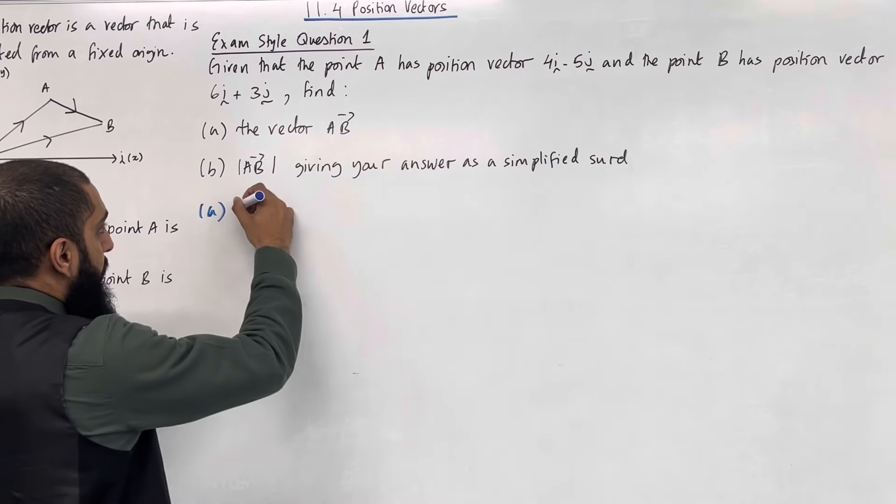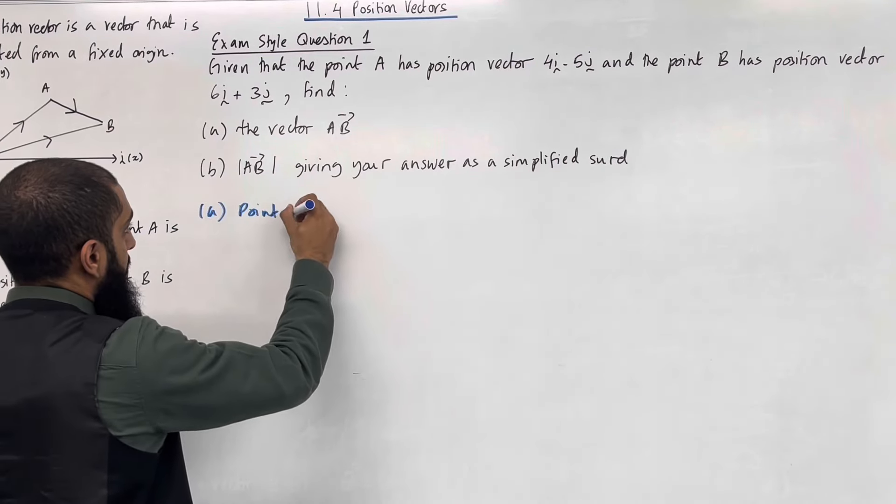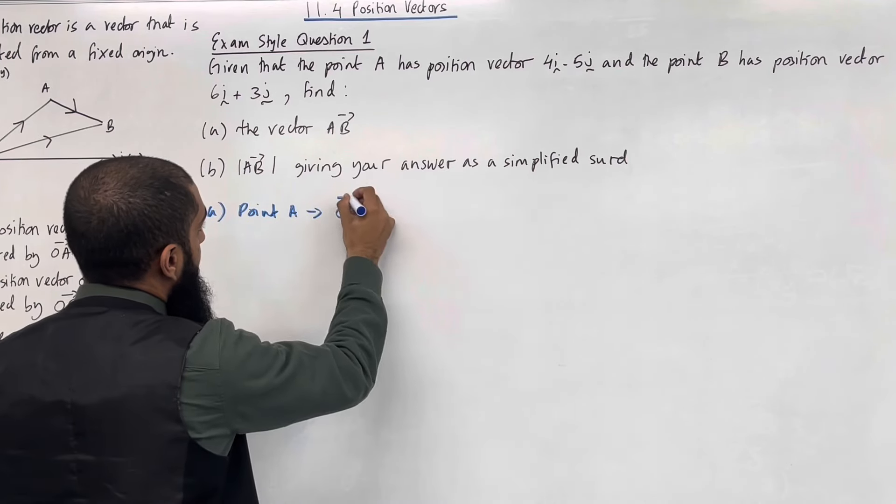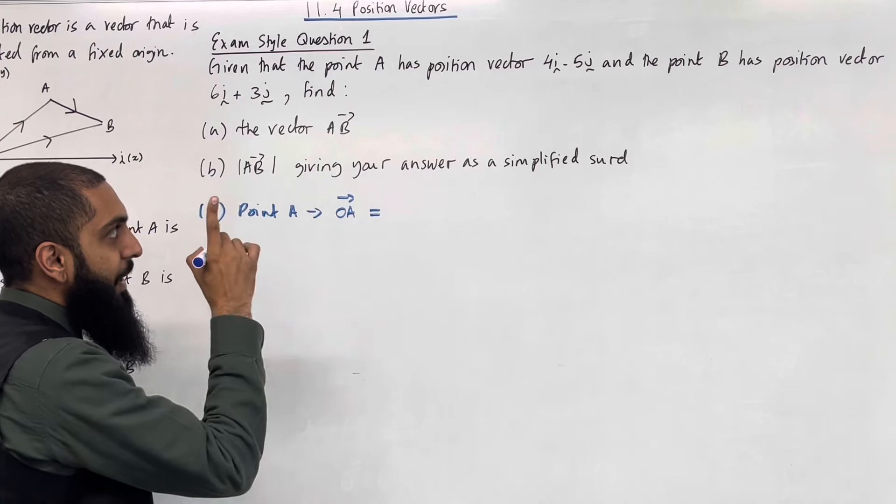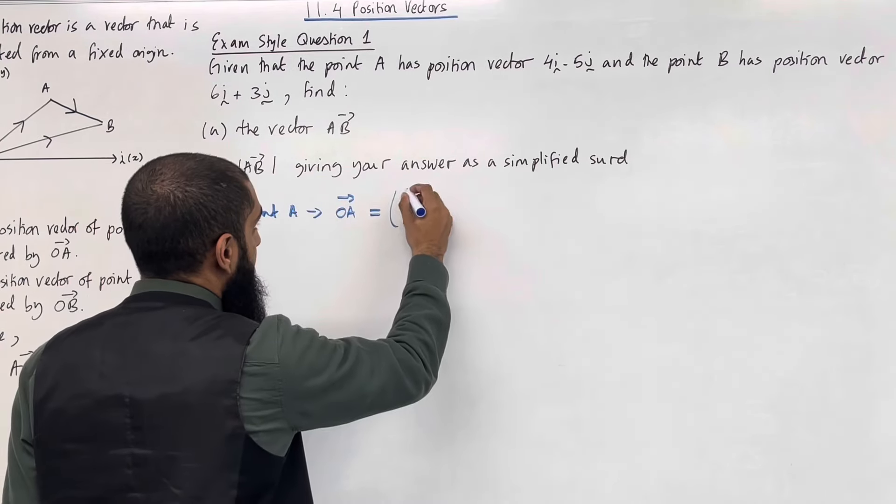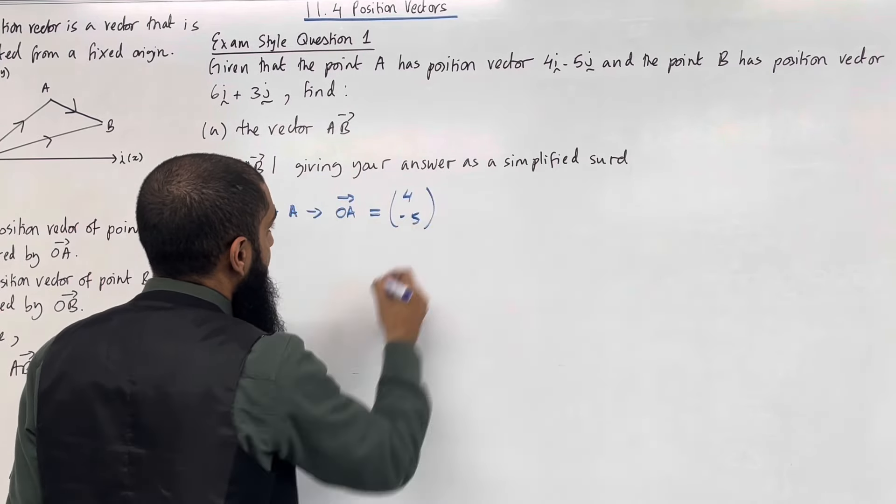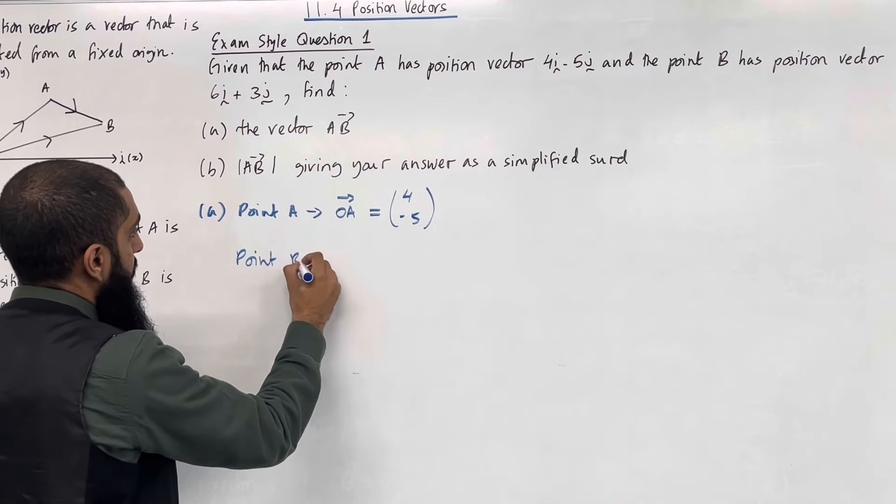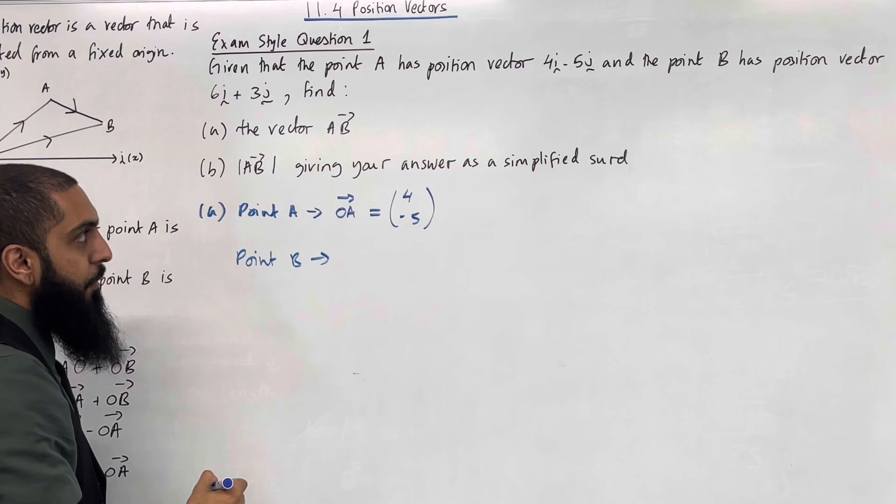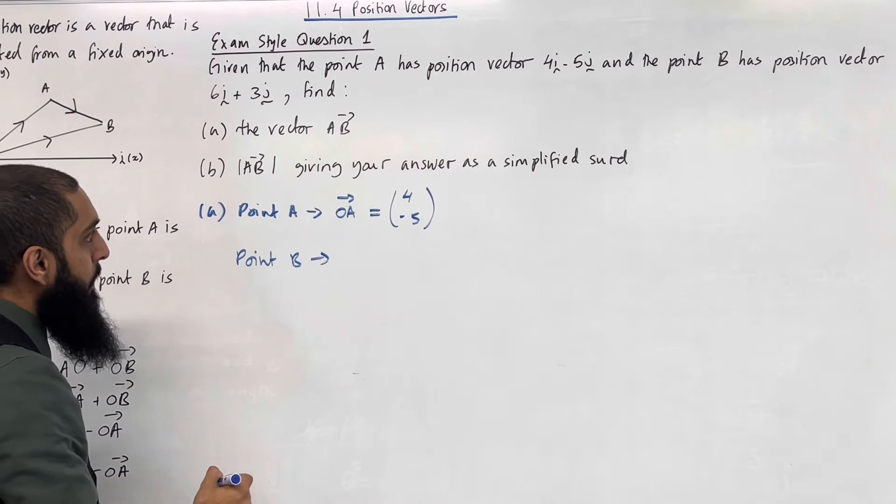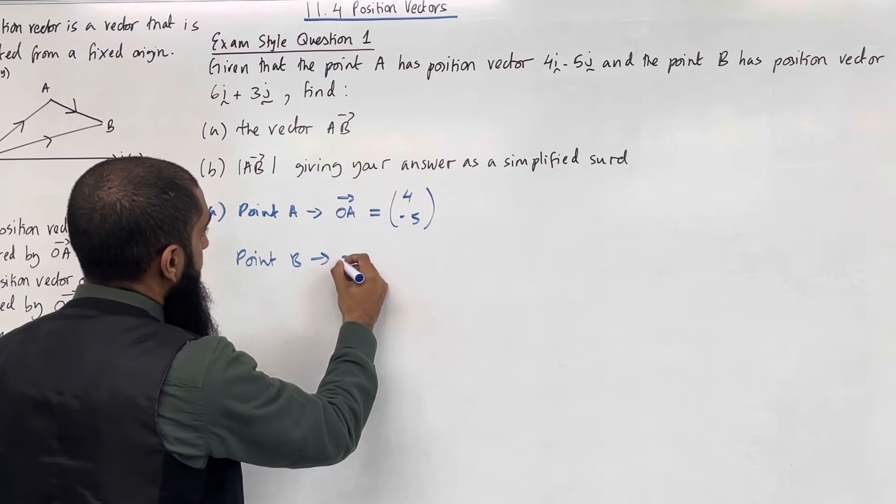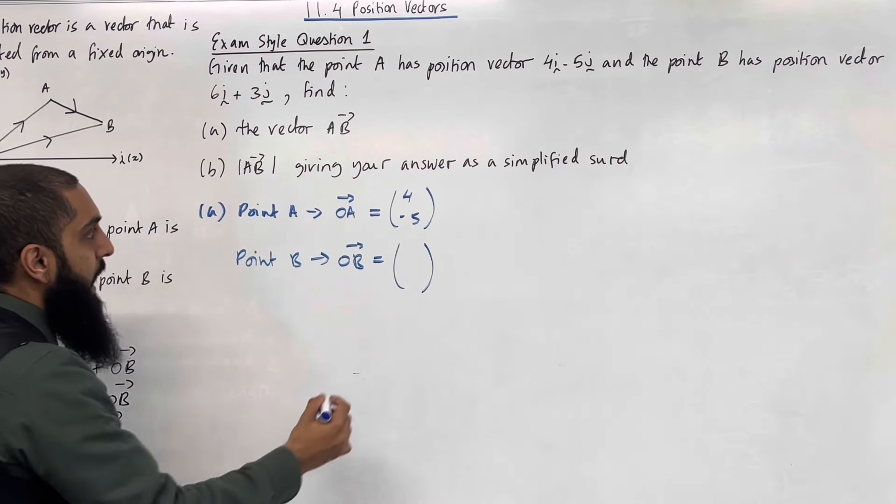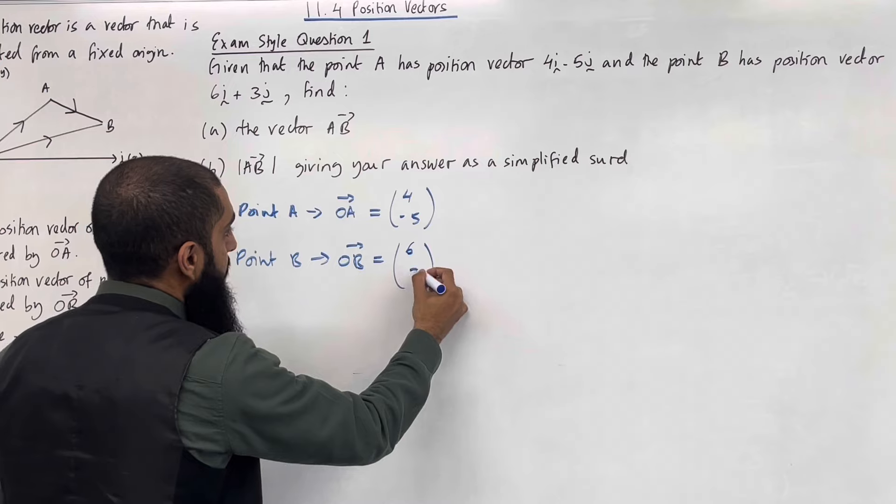So if we're looking at point A, the position vector of point A is denoted by O to A. And that position vector is 4i minus 5j. I can write it as a column vector 4 and minus 5. Let's have a look at point B. The position vector of point B is 6i plus 3j. So this is denoted by O to B. I can write it as a column vector. So 6i plus 3j is basically 6 and 3.